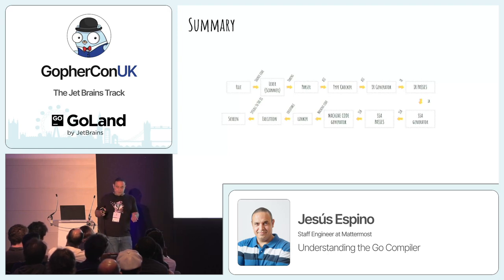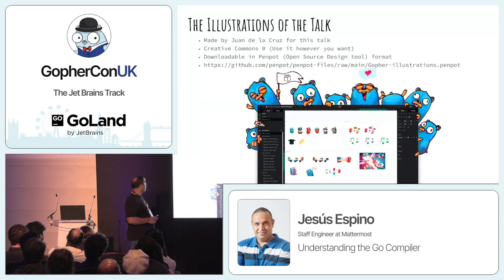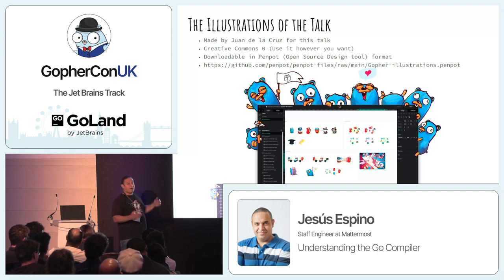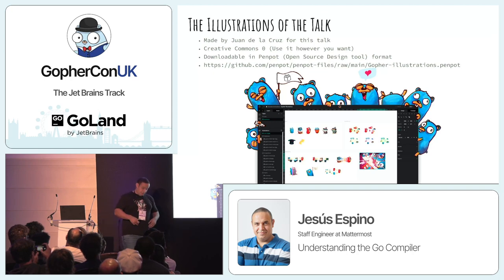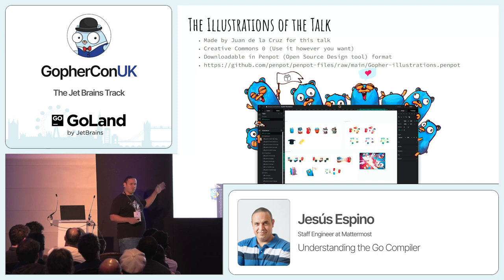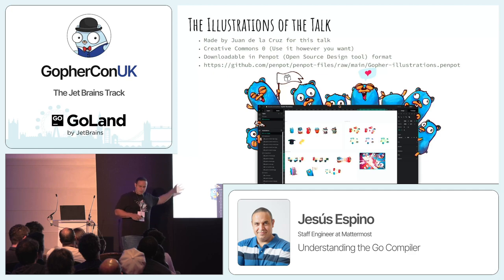All the illustrations in this talk were made by Juan de la Cruz and are released under Creative Commons Zero — public domain. Those illustrations are mine but also yours: you can make stickers, t-shirts, whatever. They're downloadable in Penpot format, which is an open-source alternative to Figma.